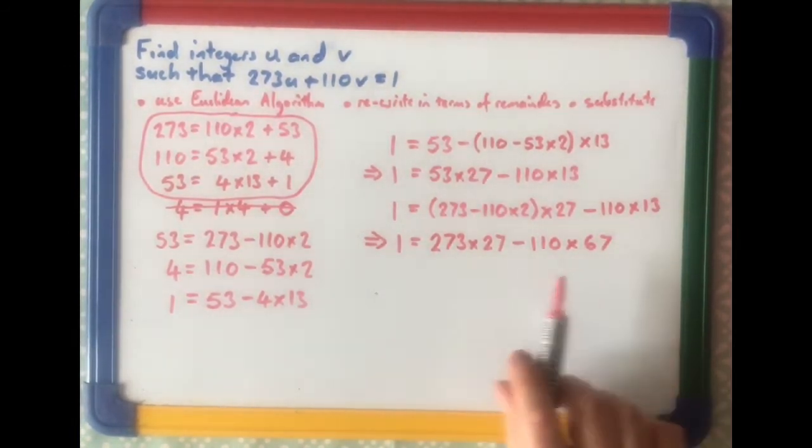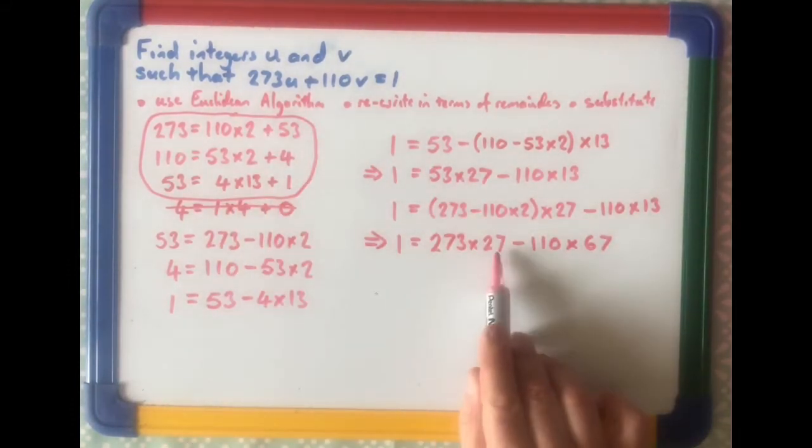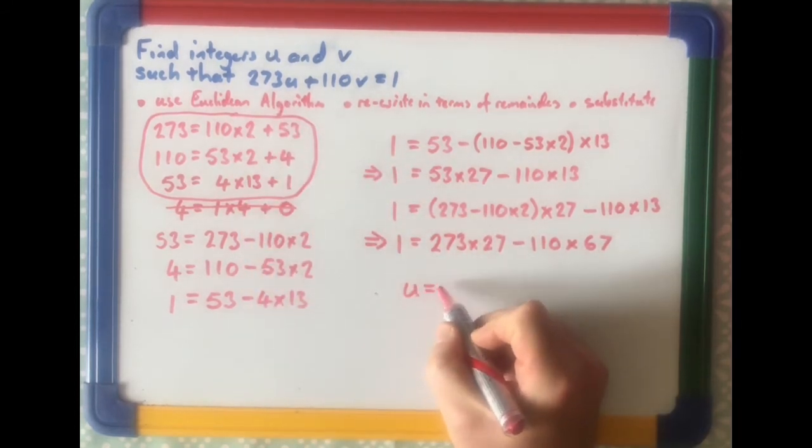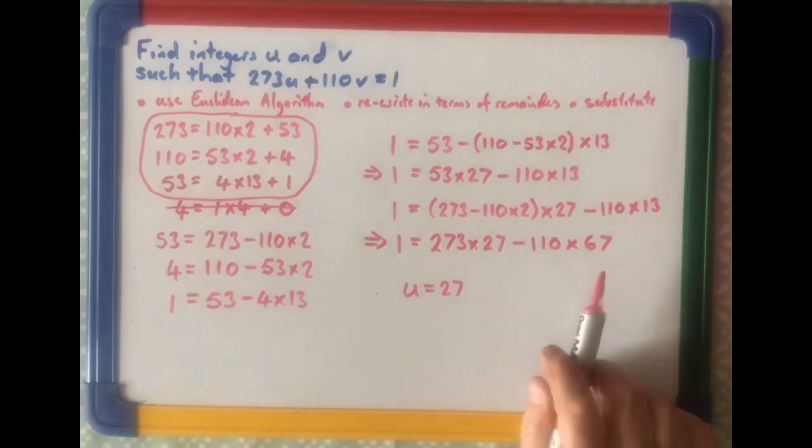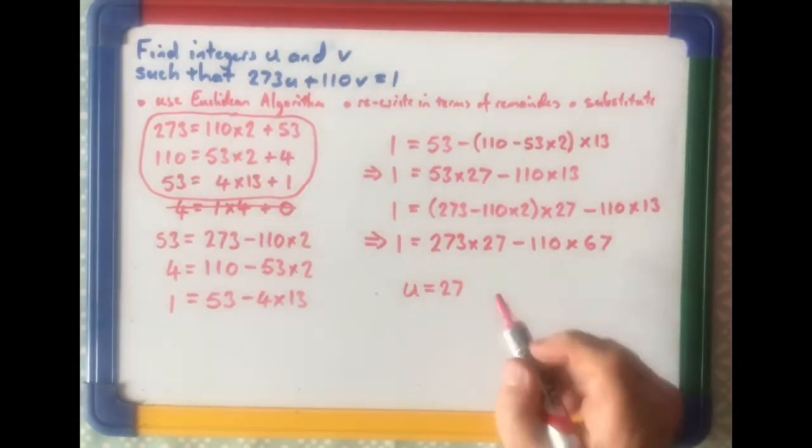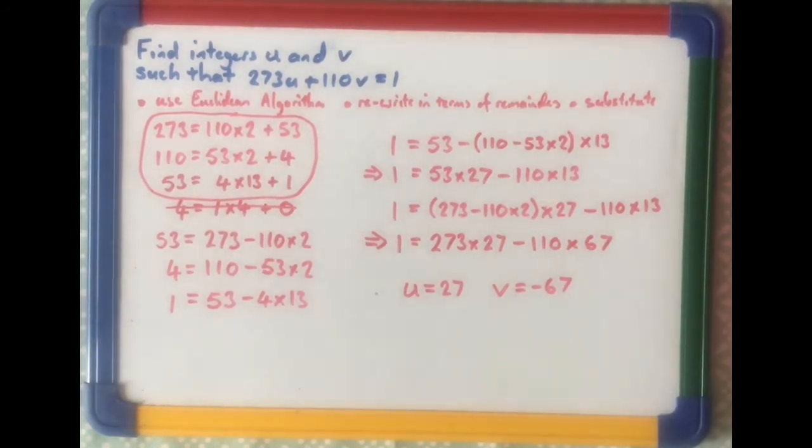Now this is now written in the same formula as up there. So if you just compare it, you can see that u has to be 27, and v has to be, now be careful, it's minus, so it has to be minus 67. And those were the two integers we were looking for.